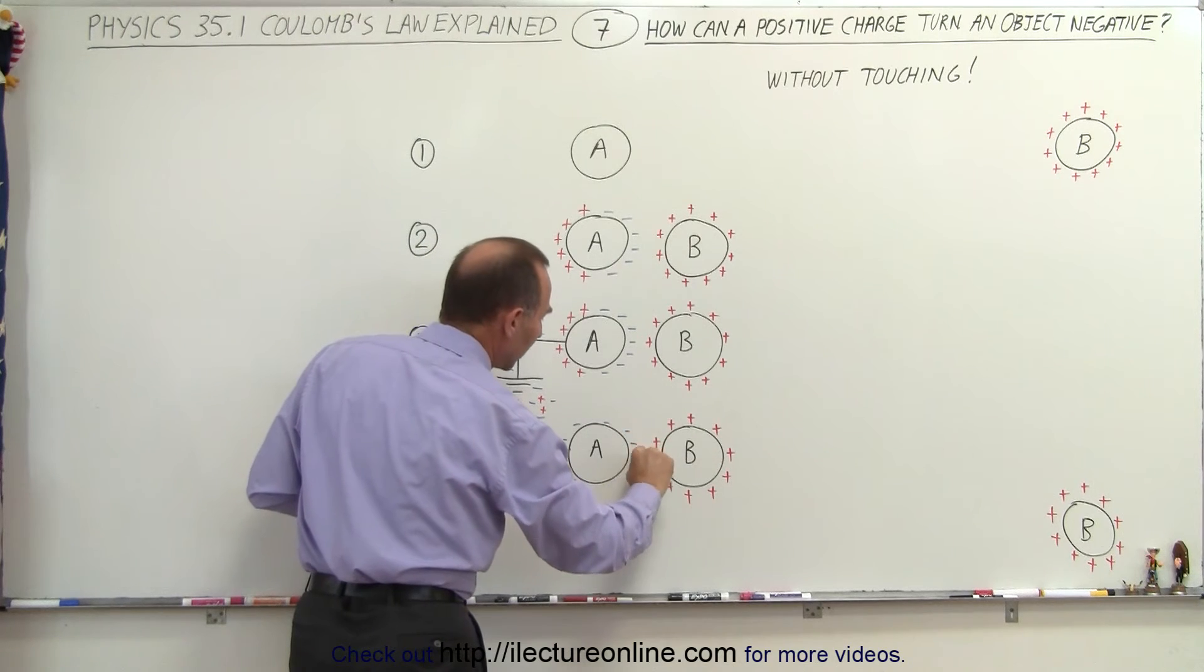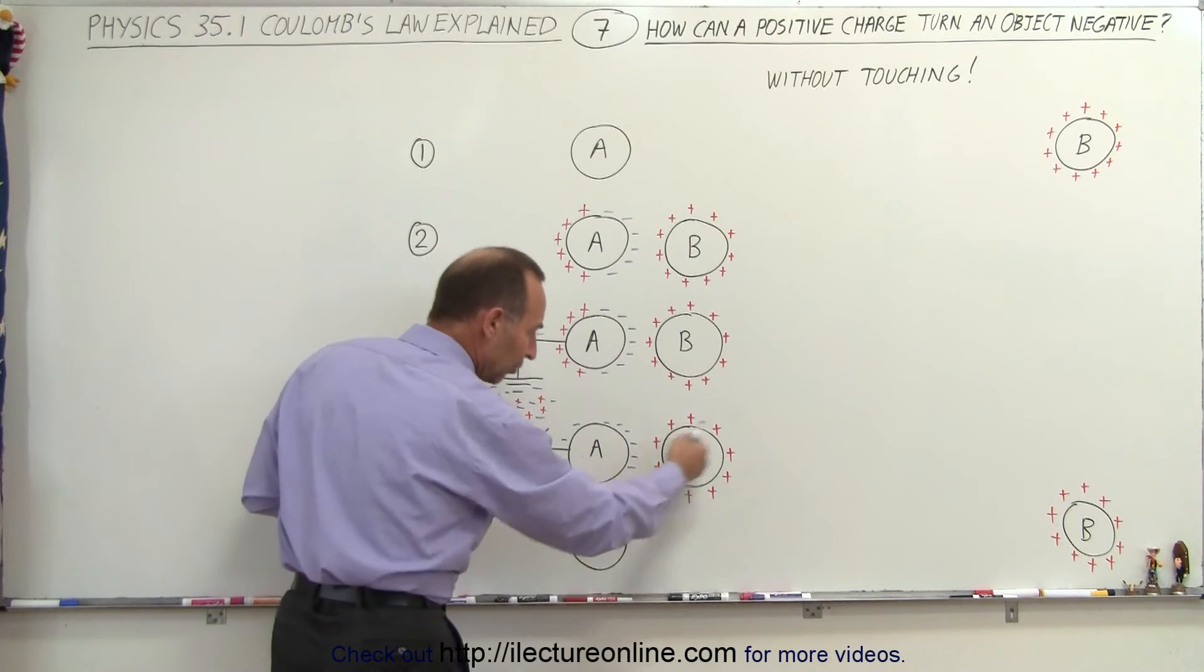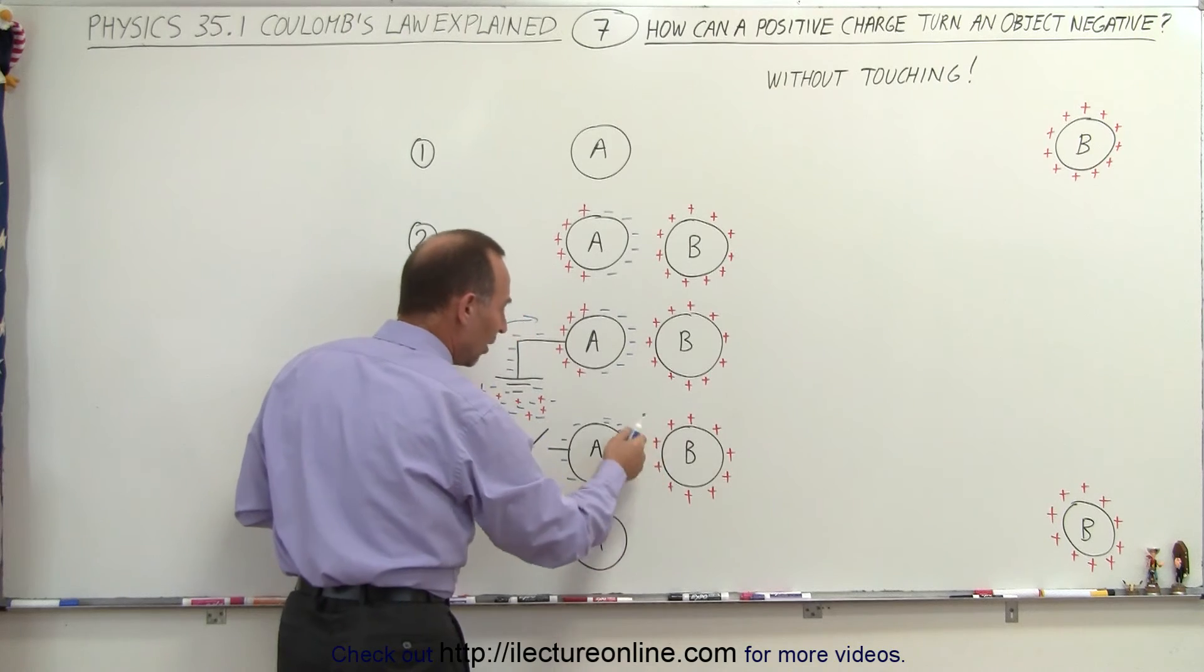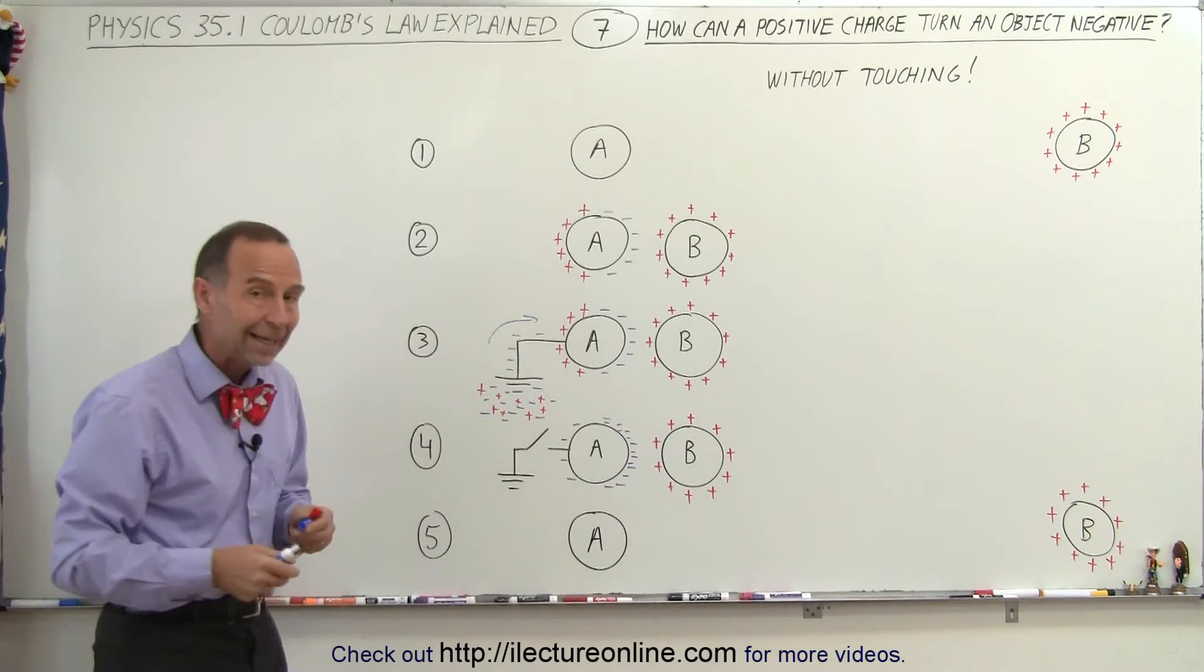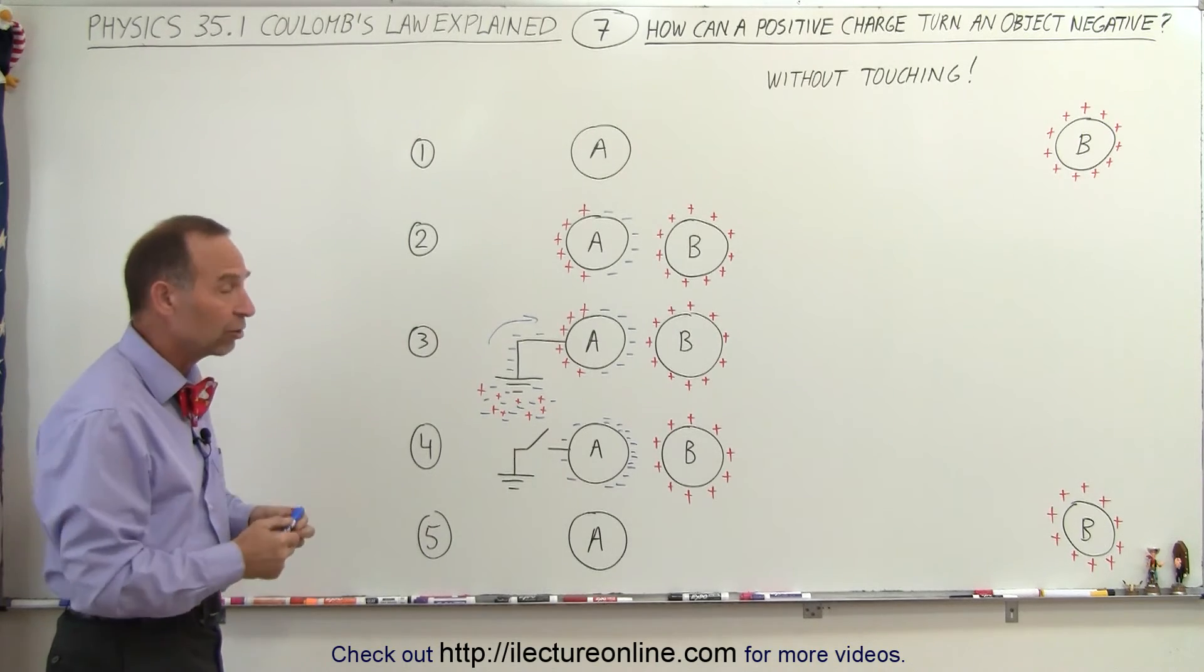More of them will still be attracted to the positive side or to the sphere B, so on the right side of A because we have sphere B there that will be attracting more negative charges, but the whole sphere A will now be negatively charged because there's more negative charges than positive charges.